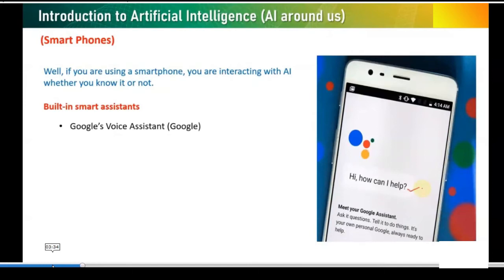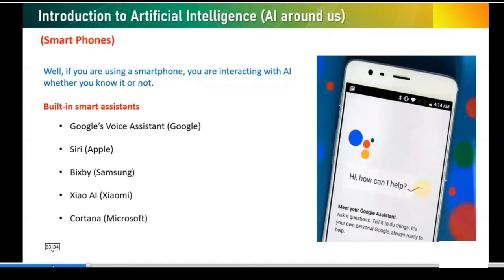Similar voice assistants are found in various other smartphones developed by other companies: Apple has developed Siri; Samsung has Bixby; Xiaomi has Zao AI; Microsoft has Cortana, which is for PCs. And then there is Alexa by Amazon — a very famous assistant. You may have seen advertisements on TV or used these standalone Alexa devices. You can ask Alexa to play a song or, when combined with other hardware such as lights and fans, give commands to operate them.